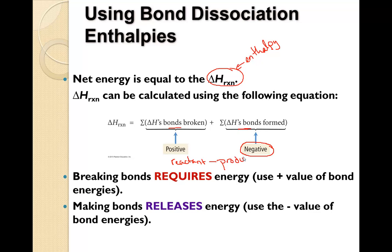Remember this minus here is all because of it being negative. Breaking bonds requires energy to do so, so we use a positive value of the bond energies. Making bonds releases energy, so therefore we use the negative value of those bond energies.